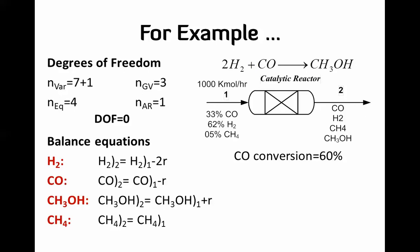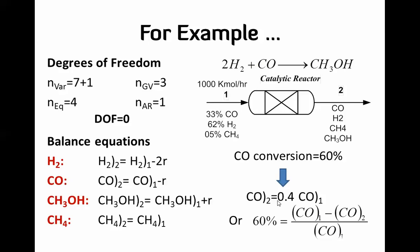For the conversion, it is the relation between the carbon monoxide in stream 1 and stream 2. It tells us how much percent of the carbon monoxide is going into the reaction. You can write it as: the carbon monoxide left after the reaction is 40% (since 60% is consumed), or equivalently: (CO_in − CO_out) / CO_in = 60%. Both equations give the same result.